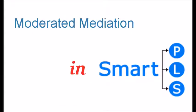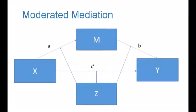If we combine the moderation and mediation models such that a moderator variable Z moderates path A, path B, or path C of the mediation model, then the model is called a moderated mediation model — because there is a moderator that is moderating the relationship A, B, or C of the mediation model.